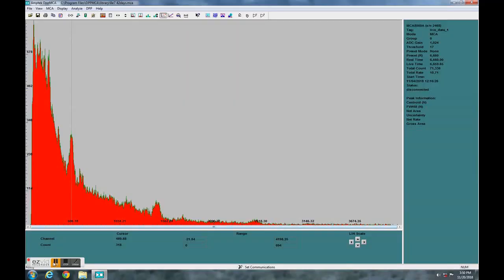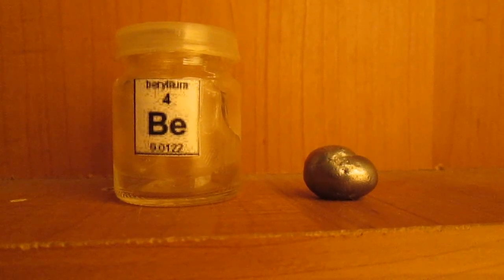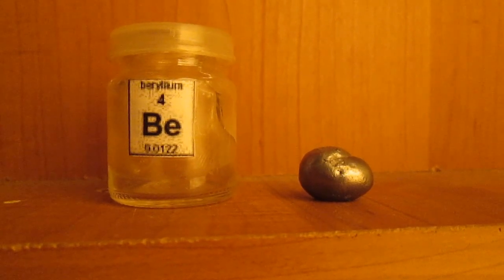If we look at the spectrum in this area around 477 keV, there is nothing else naturally occurring that could be present. So I'm pretty confident that this is indeed beryllium-7.